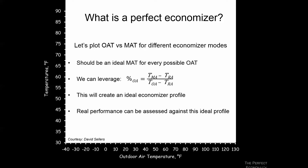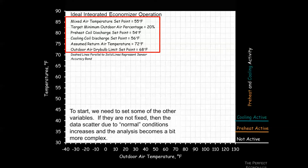Given these operating conditions — a 55-degree mixed air temperature set point, a minimum 20% outside air for ventilation, specific coil discharge set points, a constant return air of 72 degrees, and an economizer lockout at 68 degrees — we can now surmise what the economizer should be doing at any given outside air condition.